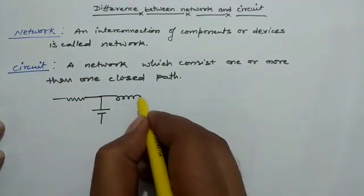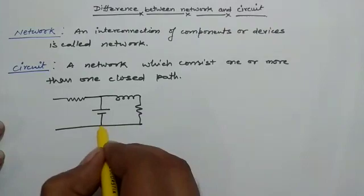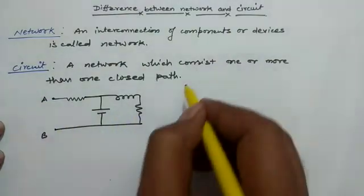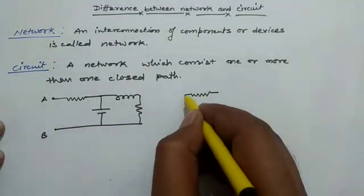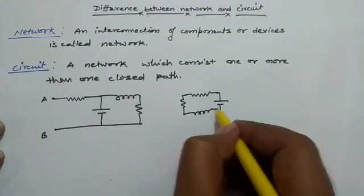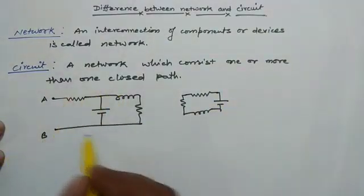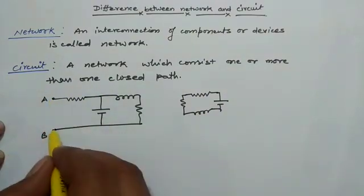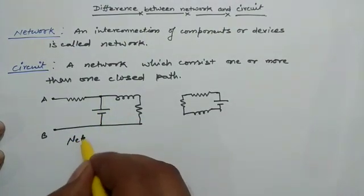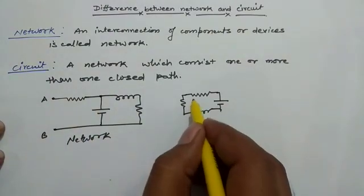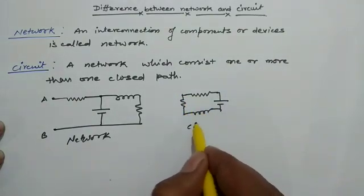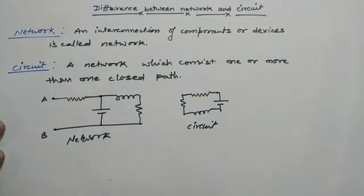For example, there are some interconnections of components like resistor, inductor, and battery. There are two connections. In this interconnection, these two terminals are open. In this interconnection, there exists a closed path, hence it is a network. In this other interconnection, there exists one closed path, so it is a circuit.